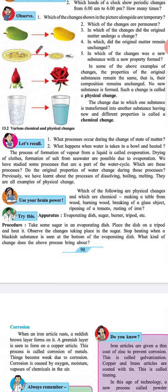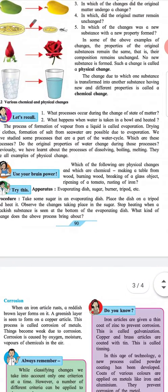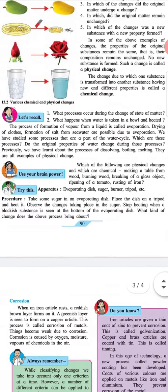Use your brain power: Which of the following are physical changes and which are chemical? Making a table from wood, burning wood, breaking of glass objects, ripening of a tomato, rusting of iron.